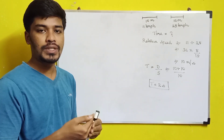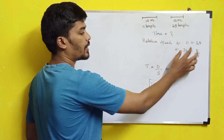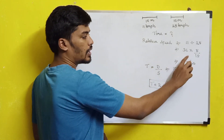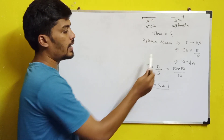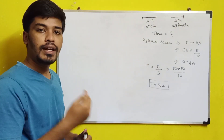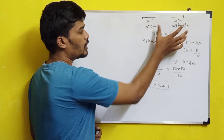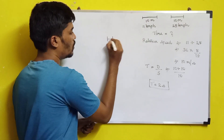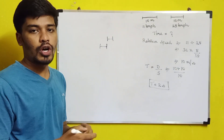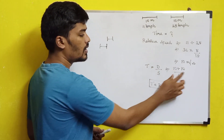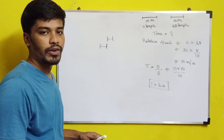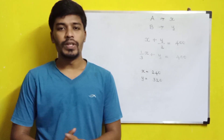When two objects move in opposite directions, we add their speeds. So the relative speed is 11 plus 25 equals 36 km/h. Converting: 36 km/h equals 10 meters per second. The total distance to cross is the sum of both truck lengths: 10 plus 10 equals 20 meters. Using the formula time equals distance divided by speed: 20 divided by 10 equals 2 seconds. The trucks cross each other in 2 seconds.